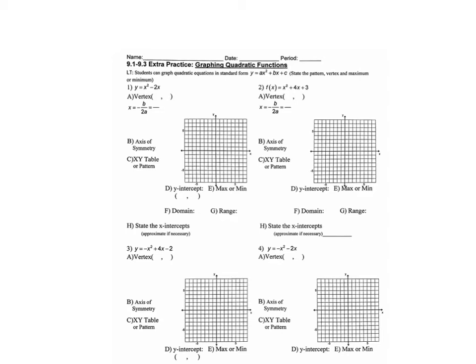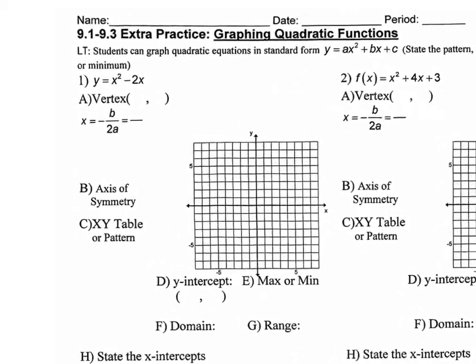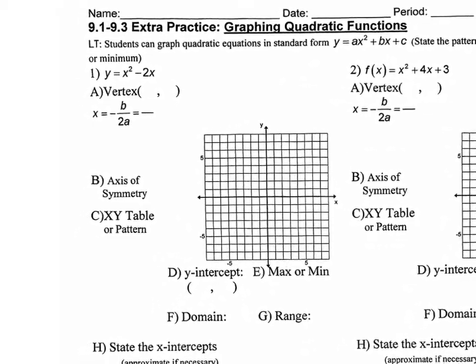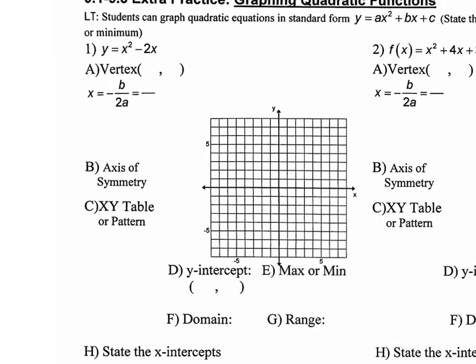All right guys, so as you can see, there are so many things to state about a parabola. On the quiz tomorrow, I believe each one of these things that you state will be worth one point. The parabola itself will be worth like three points. So you get a point for the vertex, for the axis of symmetry, for the xy table or pattern, for the y-intercept, maximum, and minimum. So let's go through these.